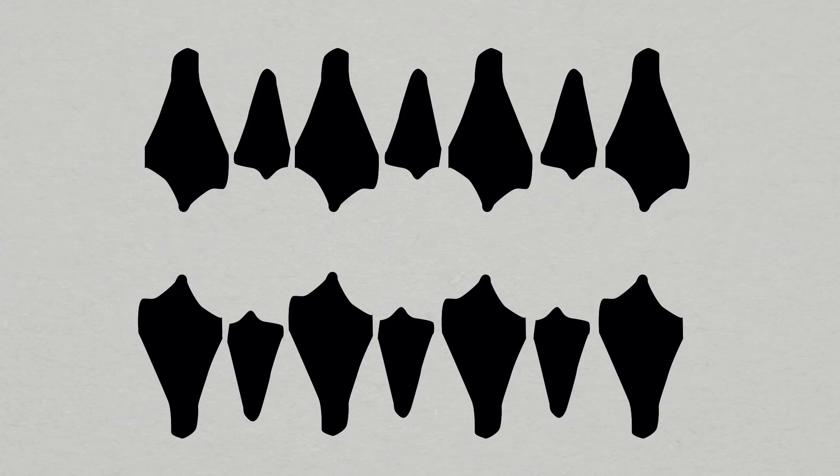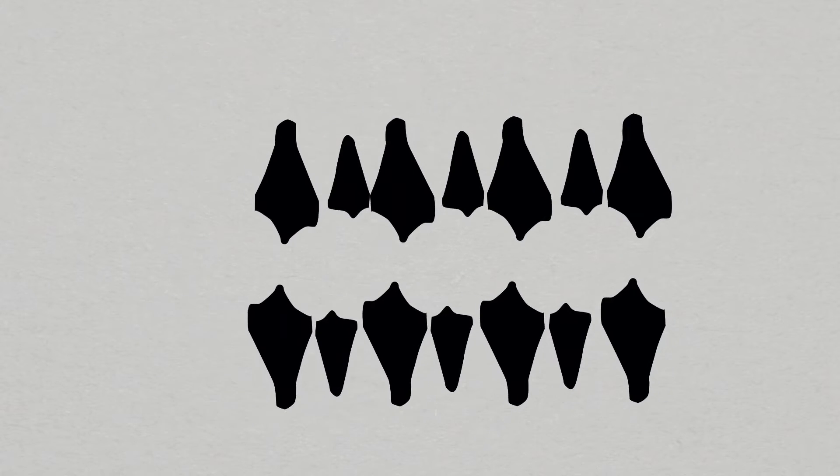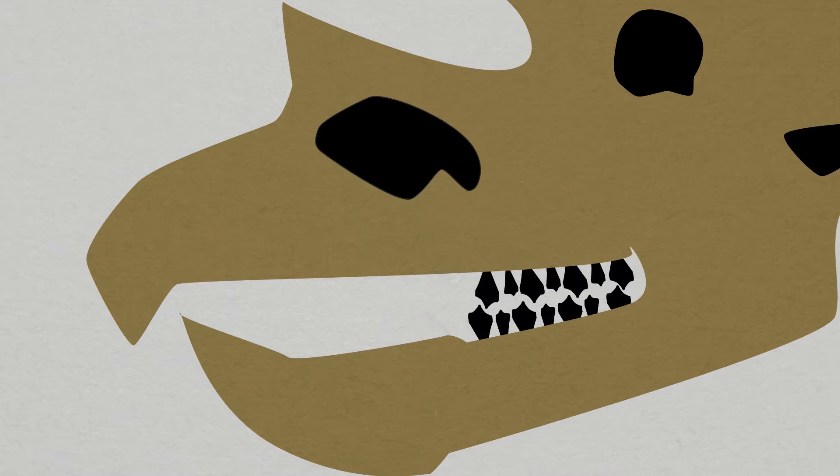The material properties of these 70-million-year-old teeth are still preserved. You essentially could take these teeth and put it in an animal today, and they would self-wear back to their functional morphology and function today.